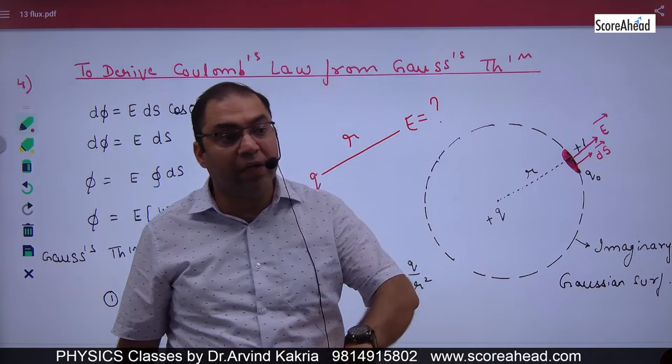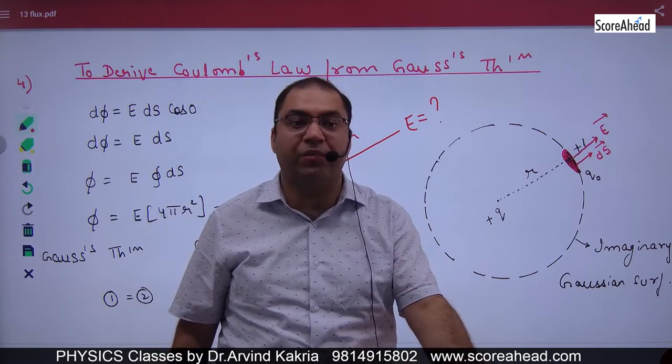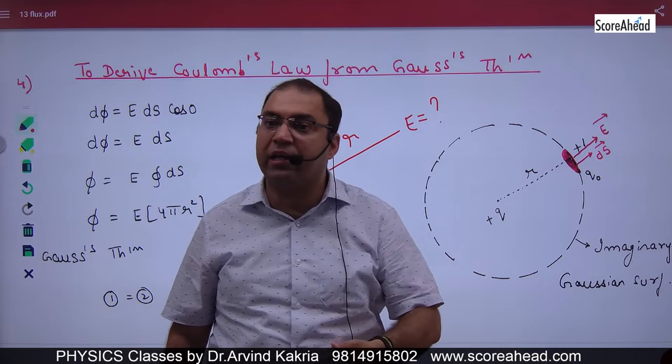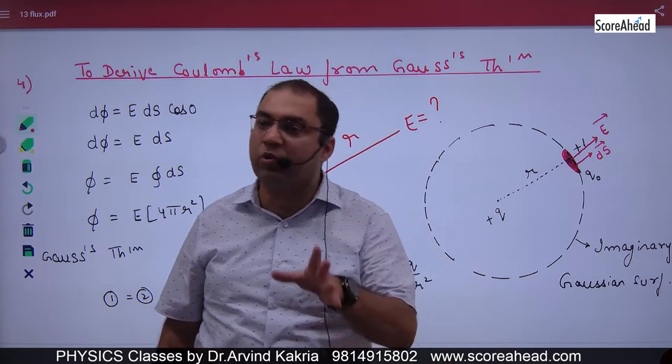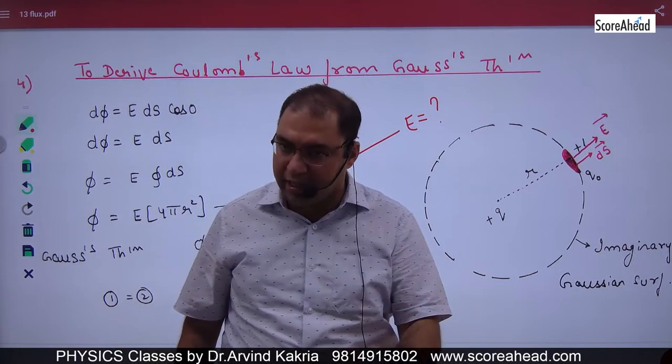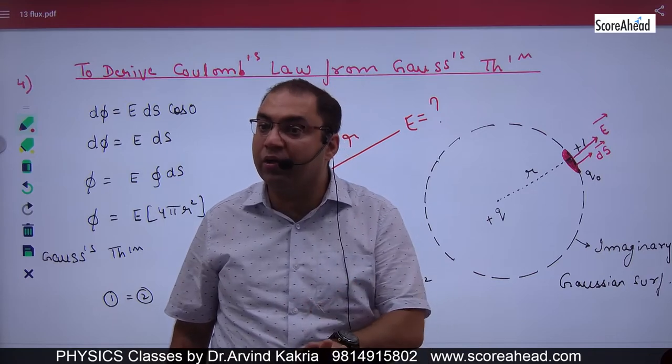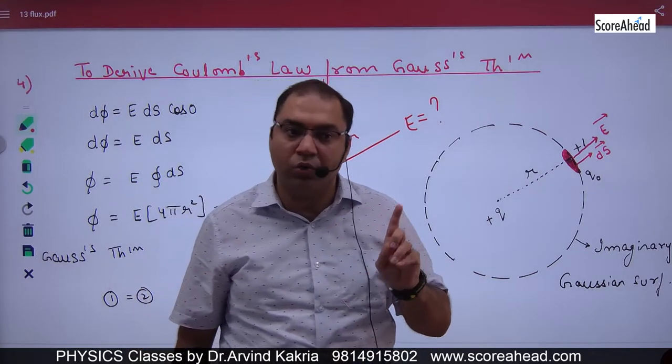So you derive the value of E and prove it that 1 by 4π epsilon q by r square. You can show me this, but by using Gauss theorem, not by using Coulomb's law.